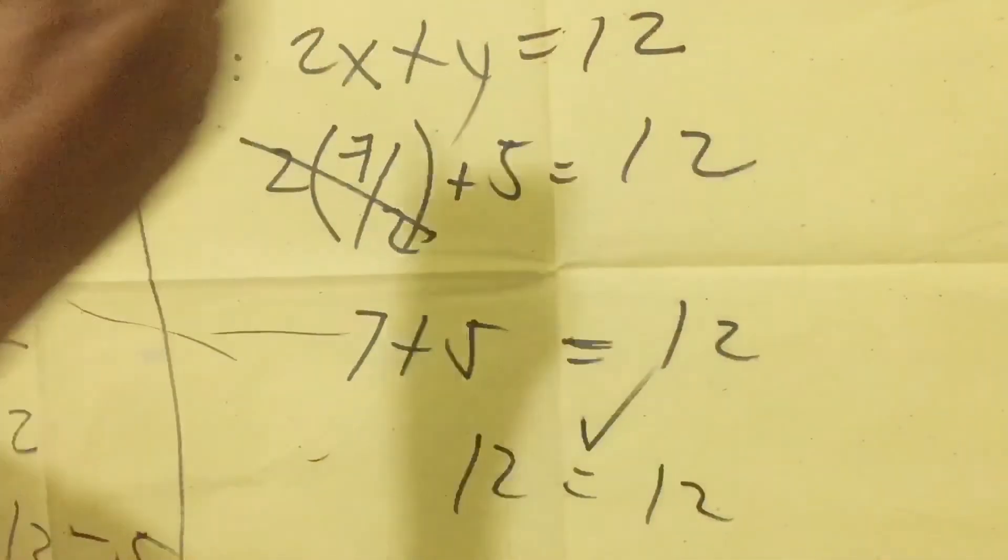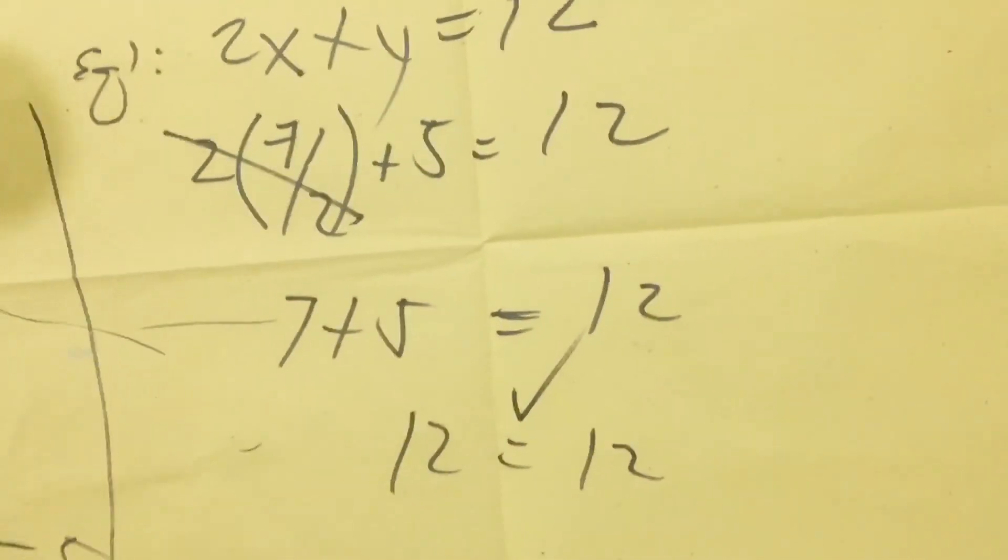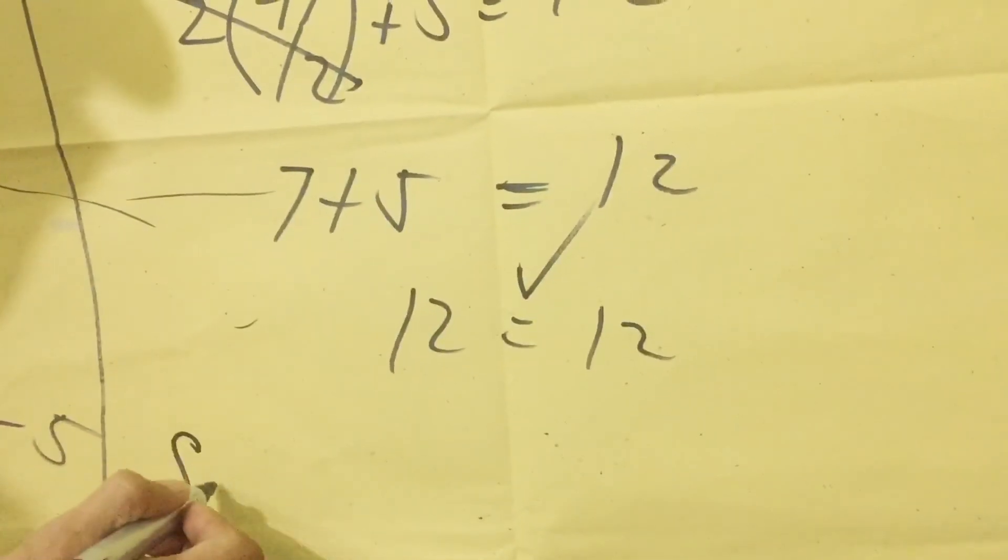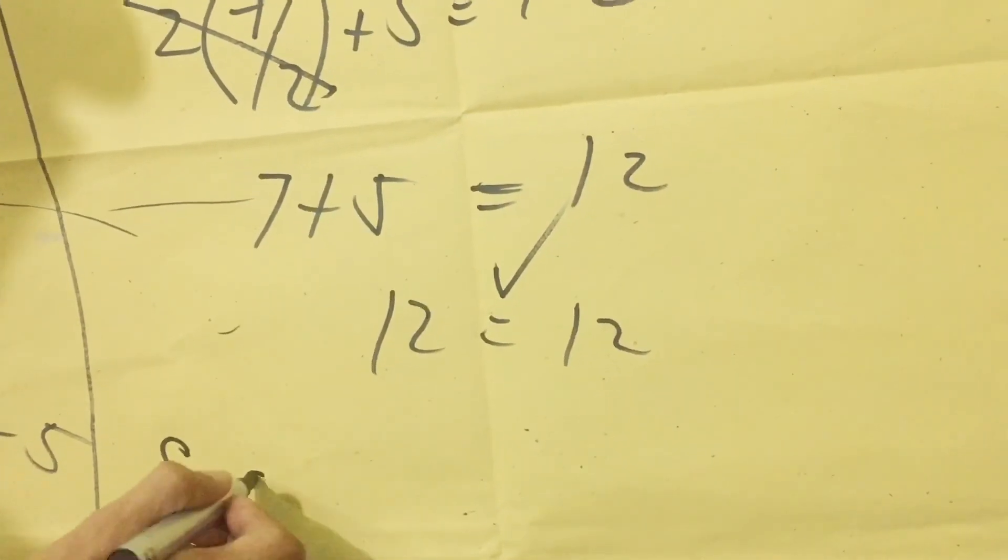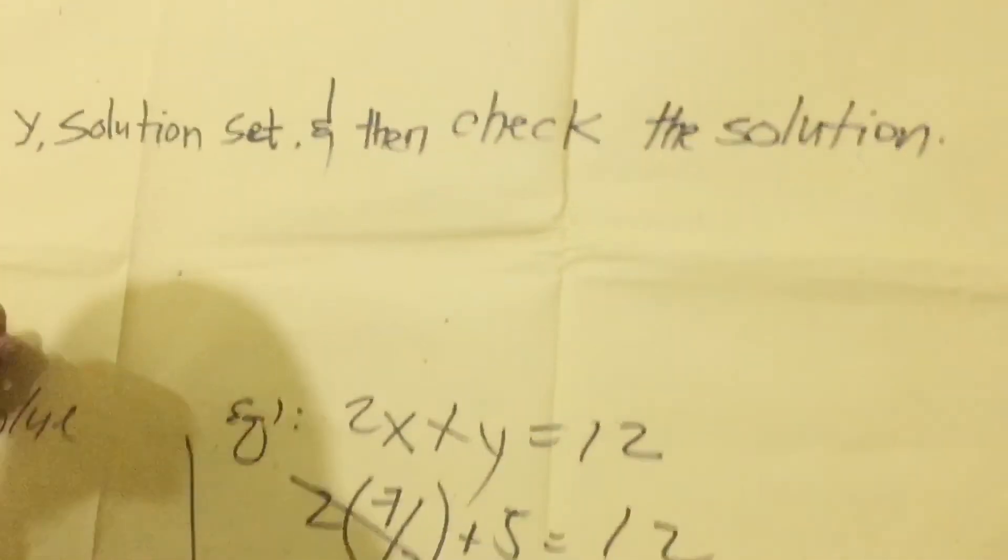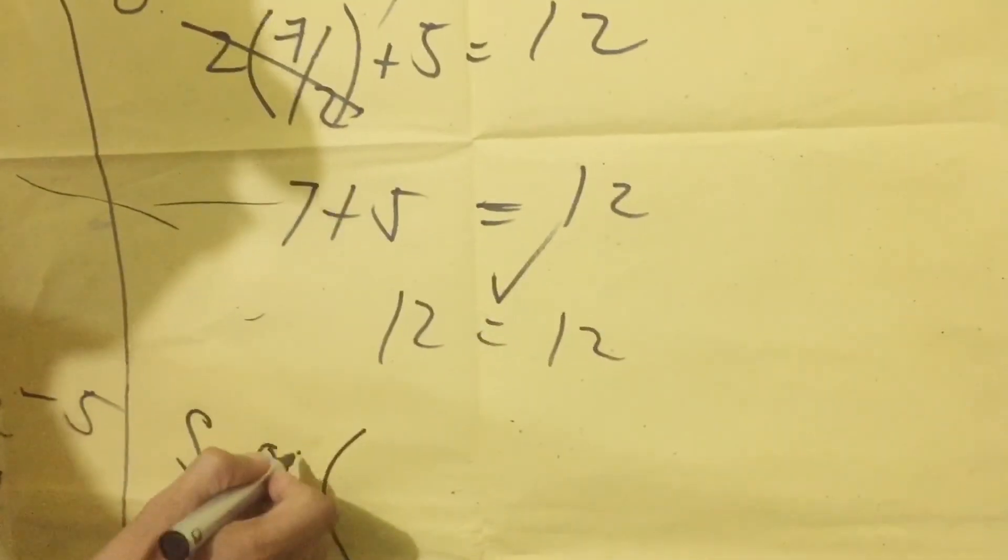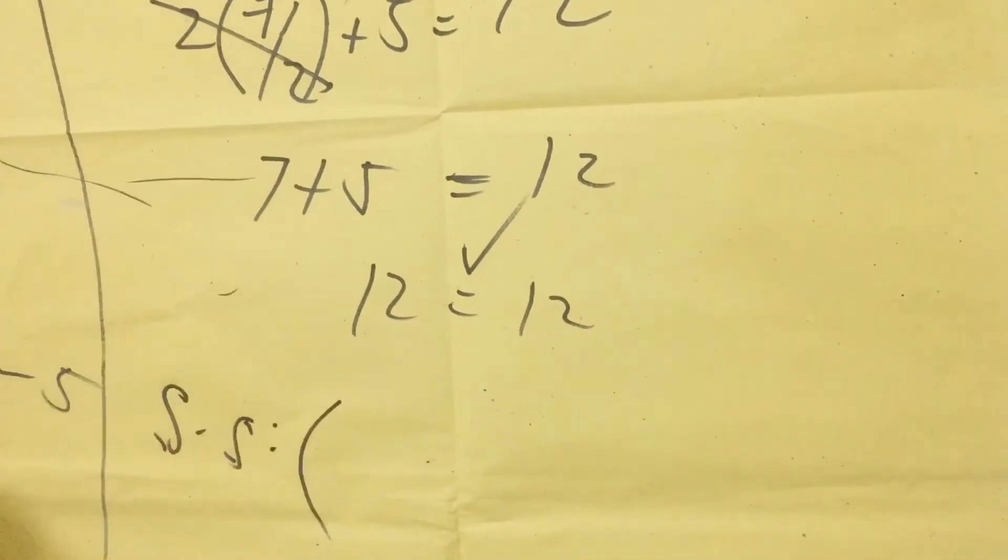So therefore, our solution is correct because the equation now is balanced. So our solution set, as per required, is our solution set is x equals 7/2 and y is 5.